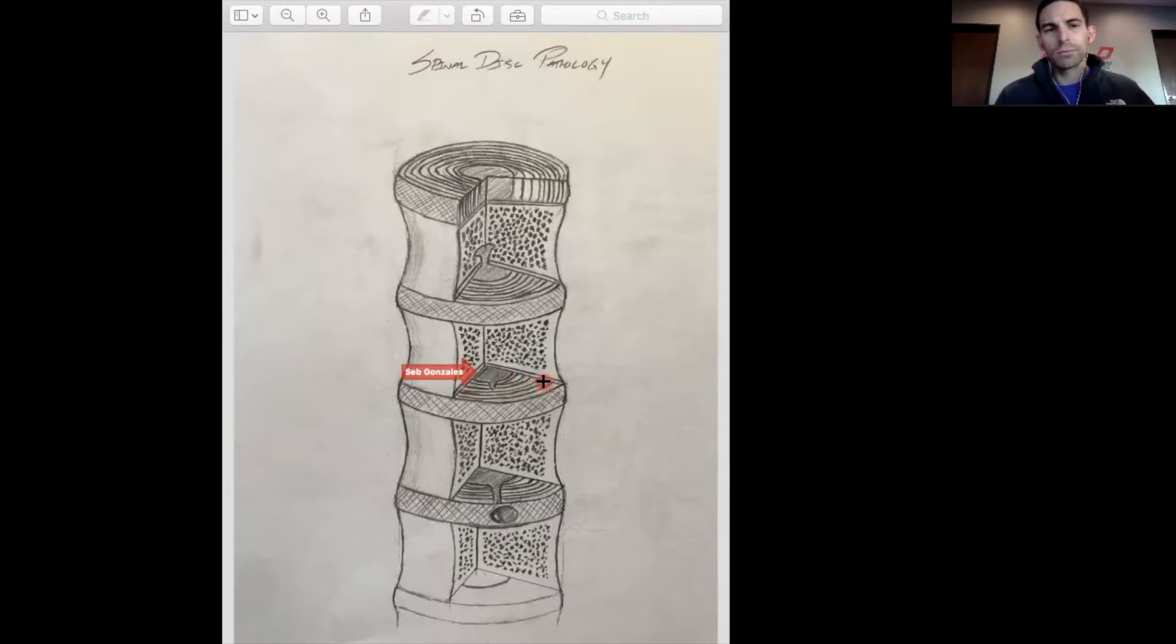This oftentimes will present as localized back pain. It will hurt a lot of times to bend forward or to the side. But it doesn't mean that this disc is completely trashed nor it's surgical at all. This oftentimes happens with repeated movements. So, repeated flexion.